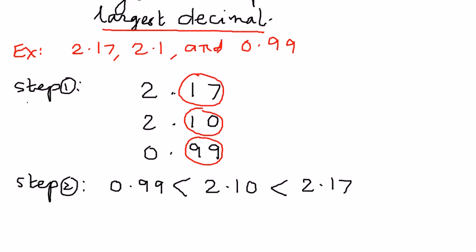So the way we can rank them from smallest to the largest, we can write that in that third step. Step three: Ranking from lowest to the highest, we can write this as follows. 0.99 is the lowest, then comes 2.10, and then comes 2.17. This is the way we want to understand how to rank decimal numbers from smallest to largest.